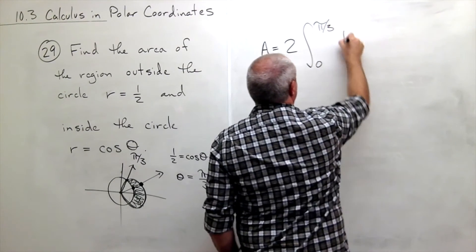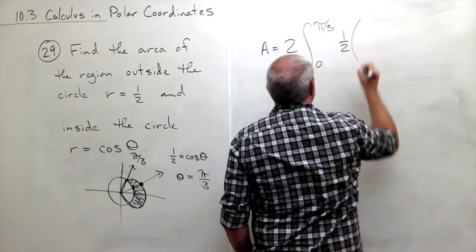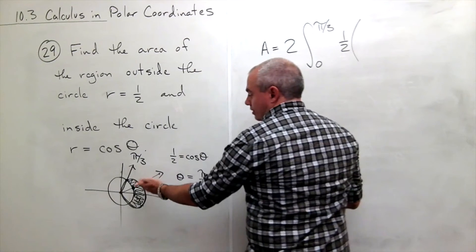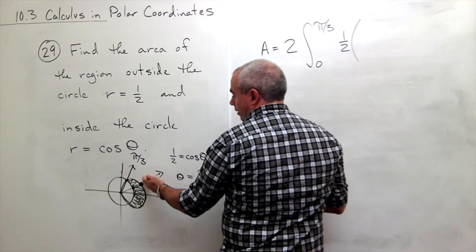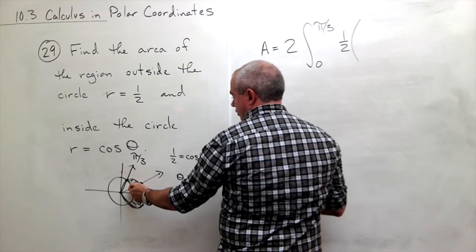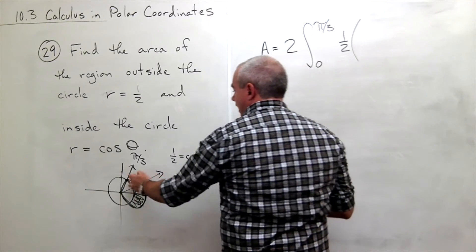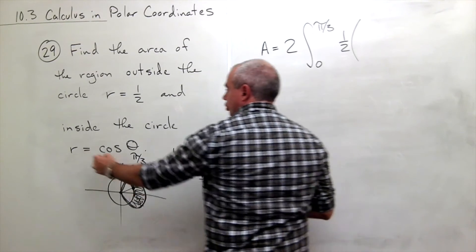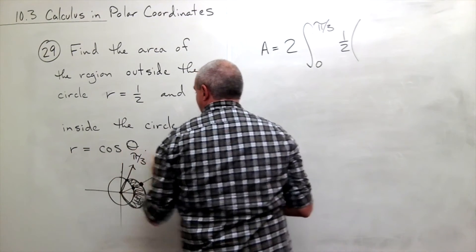of one-half times the outside function squared minus the inside function squared. So the outside function in this case is the function r equals cosine of theta.